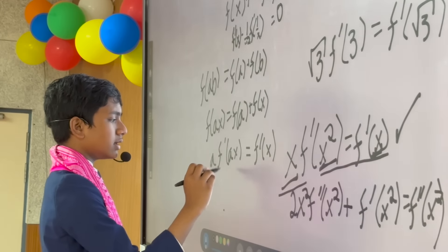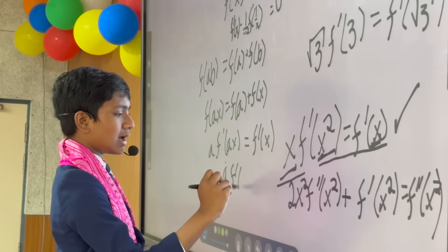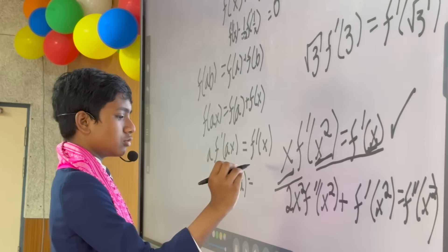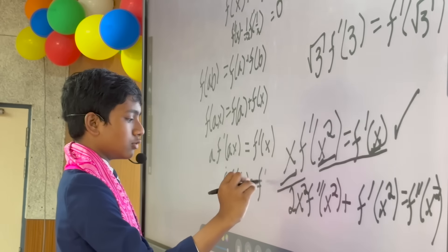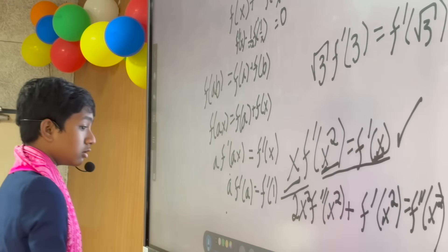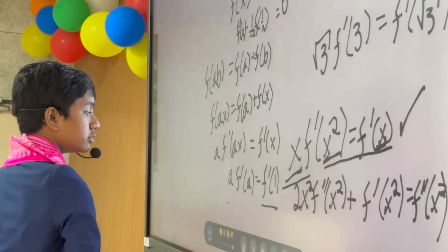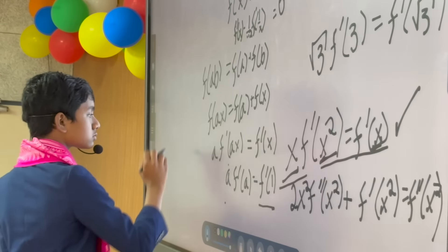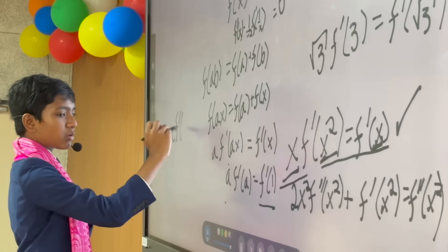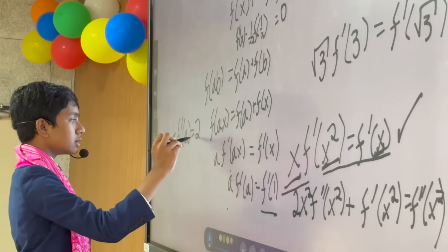If we get a·f'(a) = f'(1), and we already know f'(1) = 2, then a·f'(a) = 2. That might actually be useful.